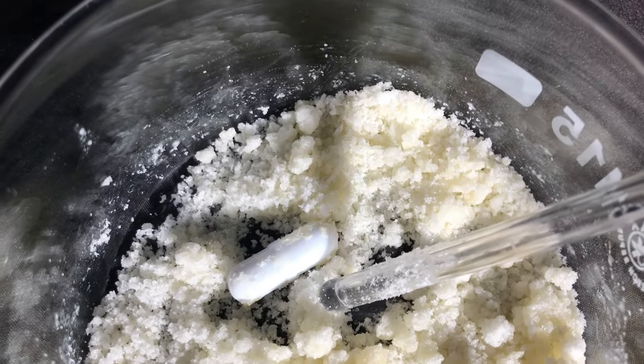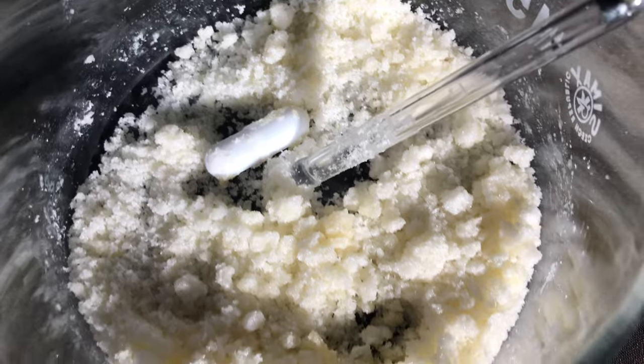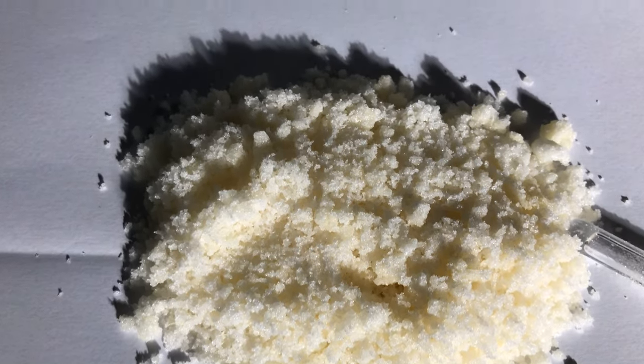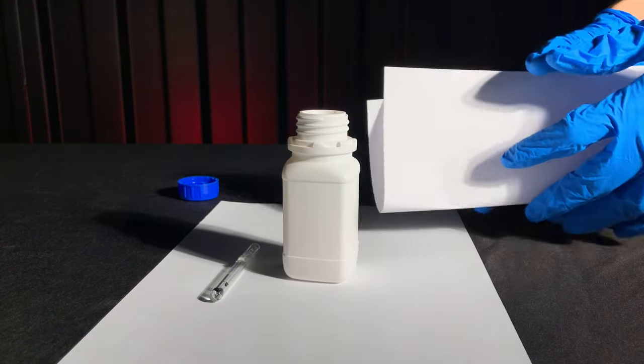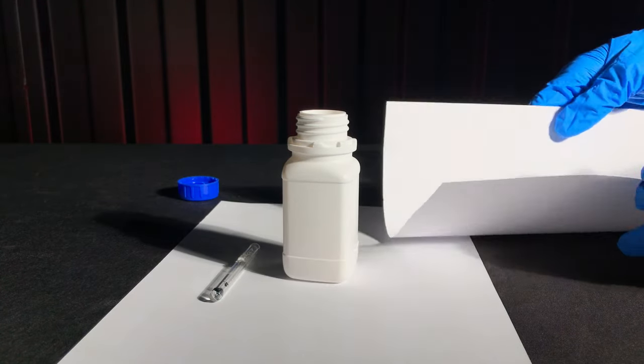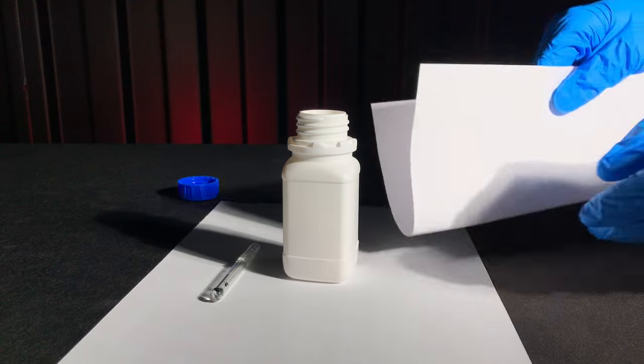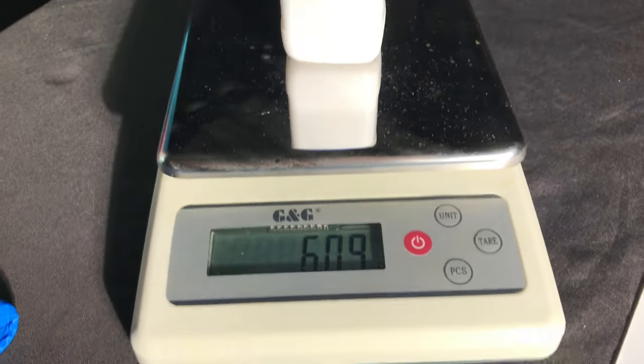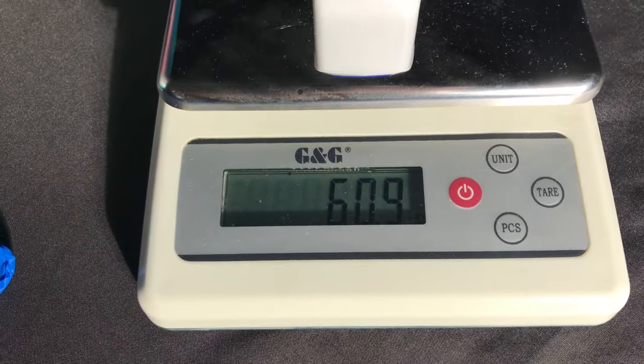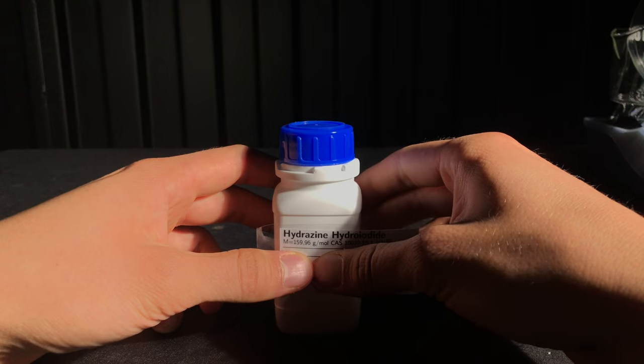In the end we were left with these beautiful, slightly yellow crystals. To determine the yield the powder was scraped onto a piece of paper and then transferred to a pre-weighed storage bottle. I always do it this way because transferring it directly from the glass dish to the bottle without spilling half of it is nearly impossible. In the end we were left with 60.9g and this represents a yield of 96.6%.